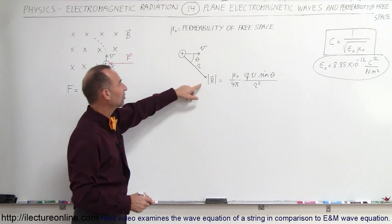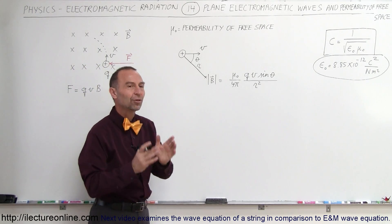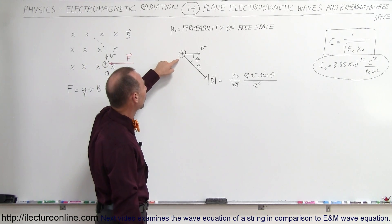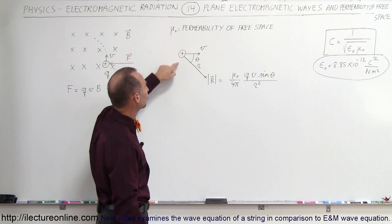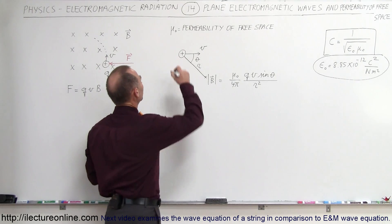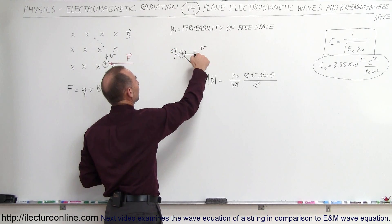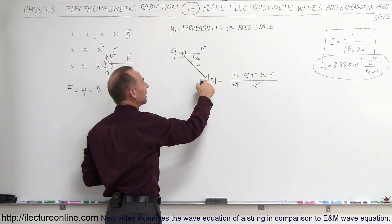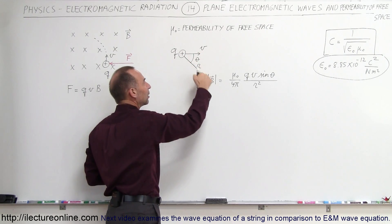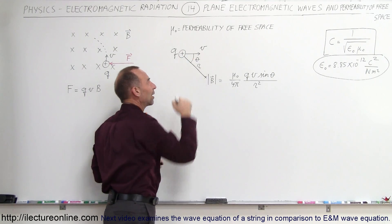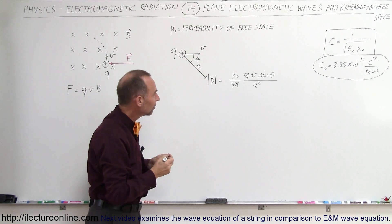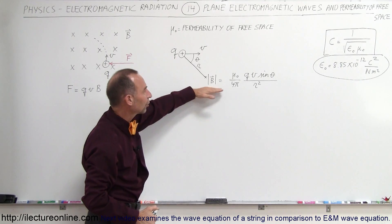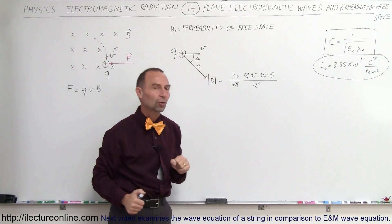Here we have an equation that describes the magnetic field strength caused by a moving charge. A charge Q moving at velocity V, at some point at distance R and at an angle theta away from the direction of velocity, allows us to calculate the magnetic field strength at that location using this equation.